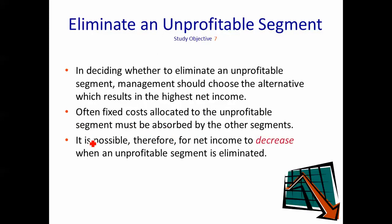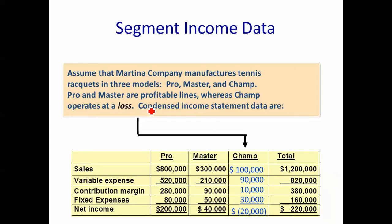Now we look at whether or not we should keep or eliminate an unprofitable division or segment. Here we have a company with three divisions: Pro, Master, and Champ.